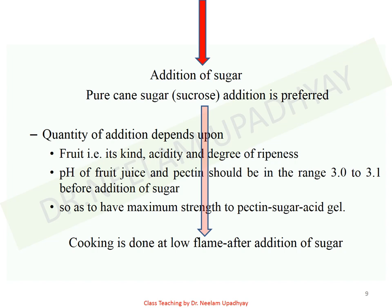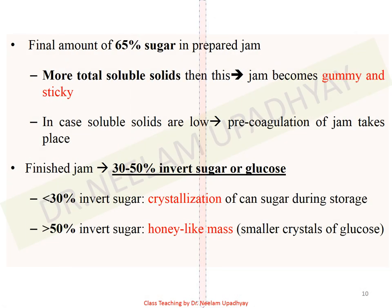After the addition of sugar, heating should be done at a low flame. As per FSSR 2011, the final amount of sugar in prepared jam should not be less than 65 percent. If you have more total soluble solids than this, the jams become gummy and sticky. If by mistake more sugar is added, the troubleshooting is to add more acid or pectin or both to counteract the excess sugar.